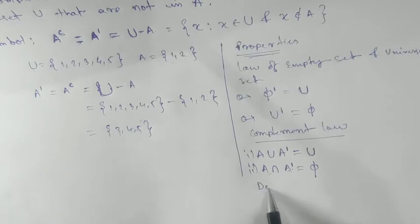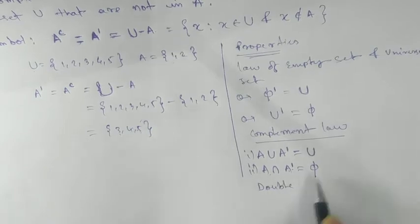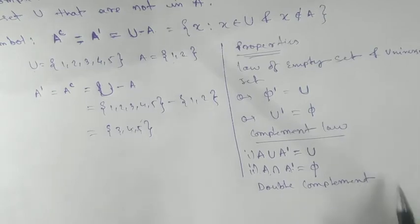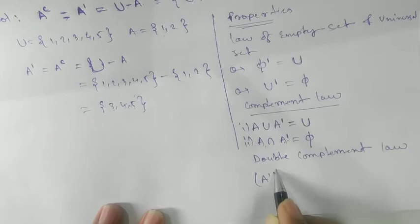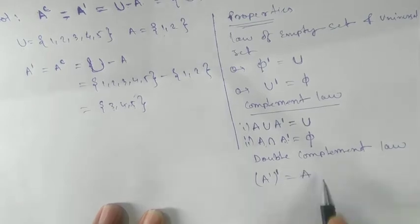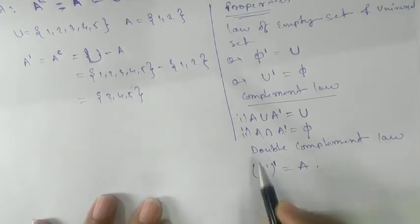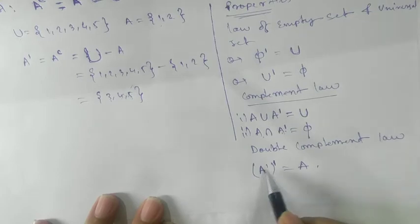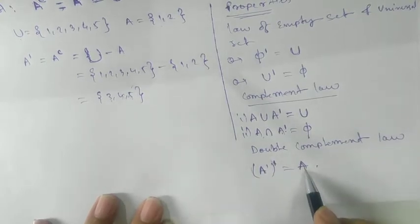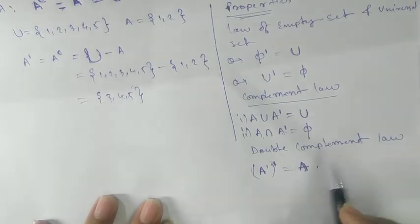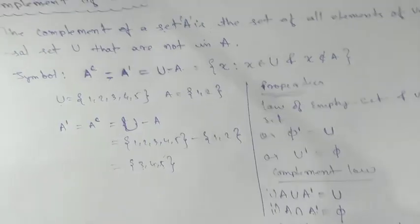Next is the double complement law. Complement of complement will always give you A. If we take complement of set A and again take the complement of it, we always get the original set A. Next, we are going to see the very important part — De Morgan's law.